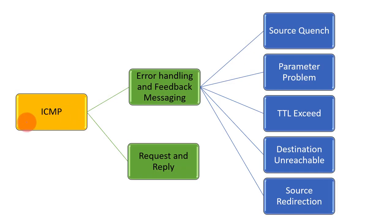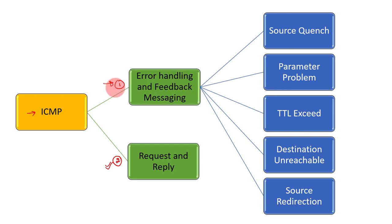In ICMP, which is the Internet Control Messaging Protocol, there are two main ways we use it: number one is error handling and feedback messaging, and number two is request and reply. We are starting our discussion with error handling and feedback messaging. These are the most widely used ways for which ICMP was created, though there are more uses beyond these.